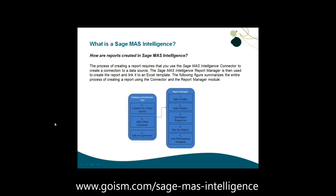The process of creating a report requires that the Sage MAS Intelligence connector is installed to create a connection to the data source — our MAS database. The report manager is then used to create the report and link it to the Excel template. The steps are: in the database administrator tool, connect to a data source, add the container, add the expression, then within report manager add the folder and report, set the report properties, run the report, and it links to a workbook.